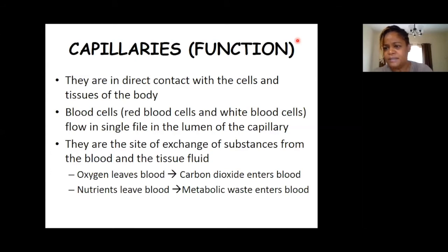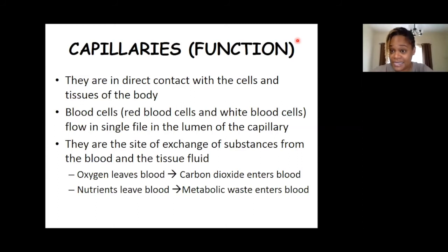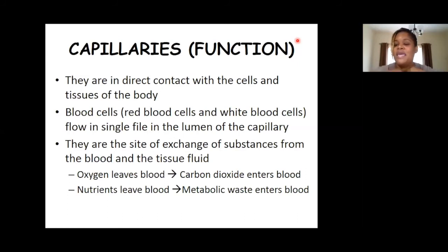Why do cells put carbon dioxide into the bloodstream? So it can leave the body. The carbon dioxide leaves the cell, enters the bloodstream through the capillaries, that blood eventually enters the veins, which return it to the heart, and the heart pumps it to the lungs, where it is exhaled. So carbon dioxide is excreted from our bodies through our lungs.